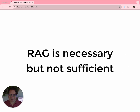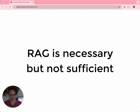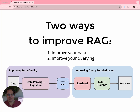That isn't to say naive RAG is useless — it's very useful and necessary to get a lot done. It's necessary, but not sufficient. Lots of tasks require semantic search, but lots require more than that. There are two avenues of improvement: the first is to improve the data quality, and the second is to make your querying more sophisticated. We're going to focus on the second one.